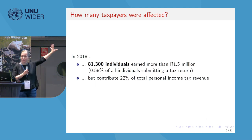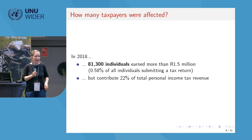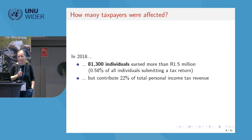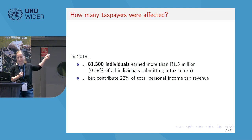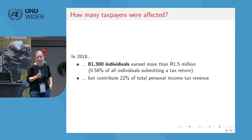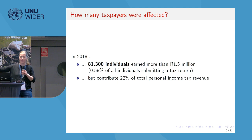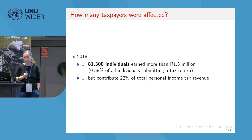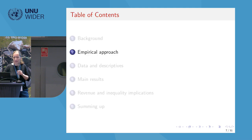In terms of which individuals were affected: the reform affected the very top end of the income distribution. In total, a bit more than 80,000 individuals were affected — a small fraction of the total taxpayer population in the PIT system. But this population contributes a massive fraction of total revenue collection: 22%. So it's 0.58% of individuals that are treated, but they contribute 22% of personal income tax revenue collection in the country. This is arguably relevant from a revenue collection perspective.